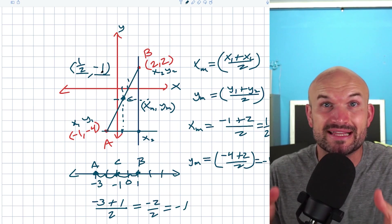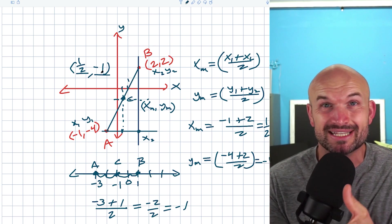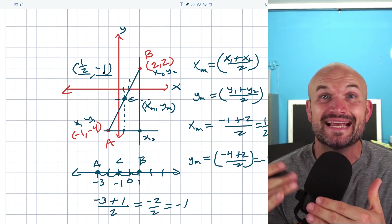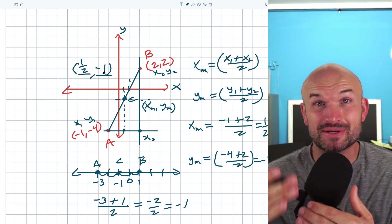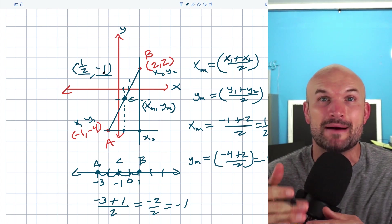So that ladies and gentlemen is how you find the midpoint when you have two coordinate points on the coordinate grid. In the next video, what I want to do is talk about how do you find the endpoint when you're given a midpoint and the other endpoint? So if you're interested in that video, you can click here or I have many more examples for you down below. Cheers.